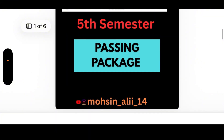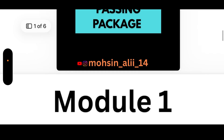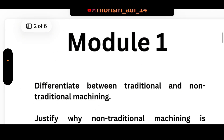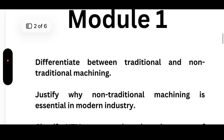This is the seventh semester passing package, and not only a passing package — this is a scoring subject. The key thing is if you are able to remember the applications, limitations, and advantages for traditional and non-traditional machining, you can apply the same approach for other modules. There are different types of machines but the applications, limitations, and advantages remain the same. Just try to shuffle the words. I believe you can score more than 90 marks in NTM.